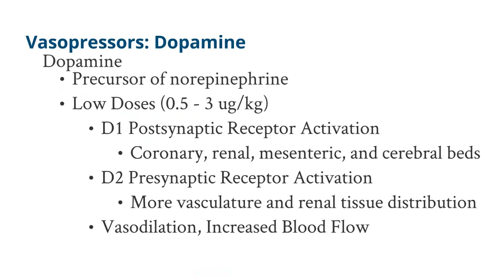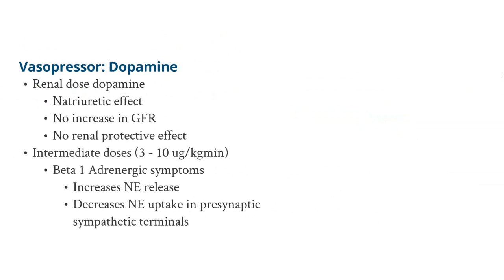Dopamine is a naturally occurring compound within our body. It is produced in the adrenal gland and it is a precursor of norepinephrine. But we can also give dopamine through a continuous drip. When given at low doses of 0.5 to 3 mcg per kilogram, you have D1 postsynaptic receptor activation and D2 presynaptic receptor activation, resulting in vasodilation and increased blood flow to the kidneys and mesentery. There was once thought that dopamine has a natriuretic effect and a renal protective effect — because there's increased flow to the kidneys, the kidneys' demands are being met and there'll be an increase in GFR — but this has not been proven conclusively in any study.